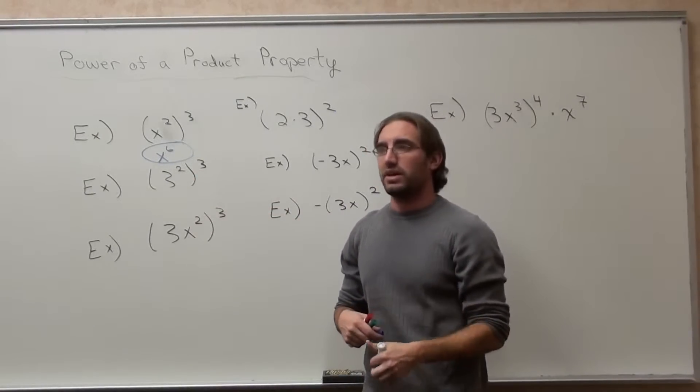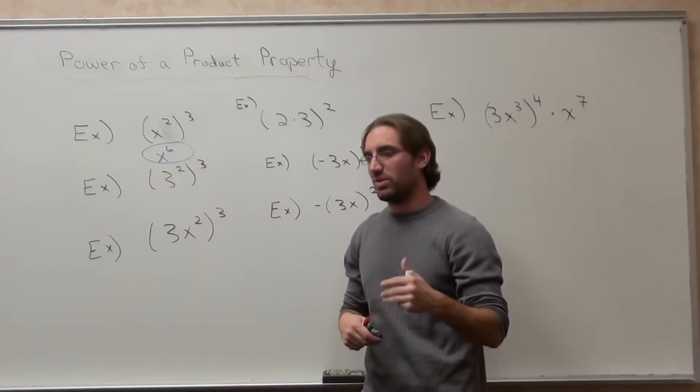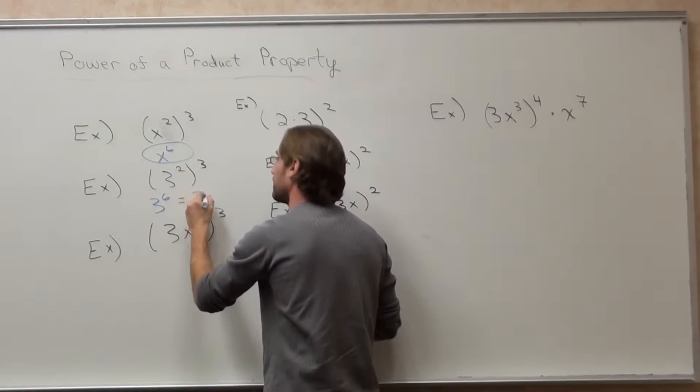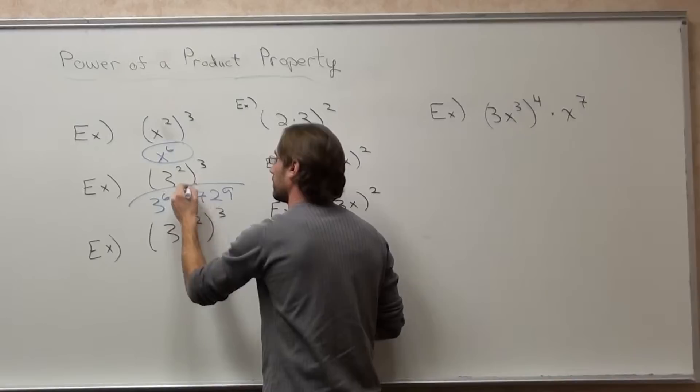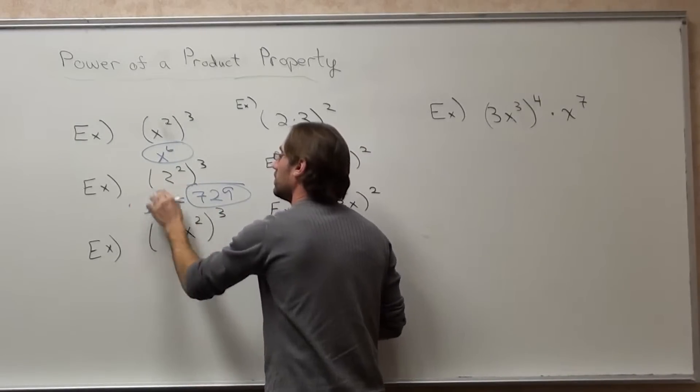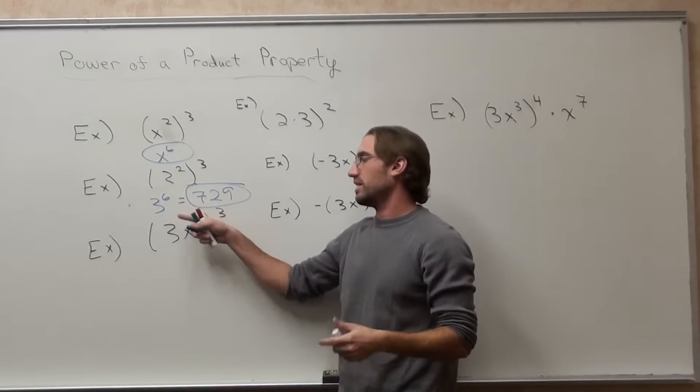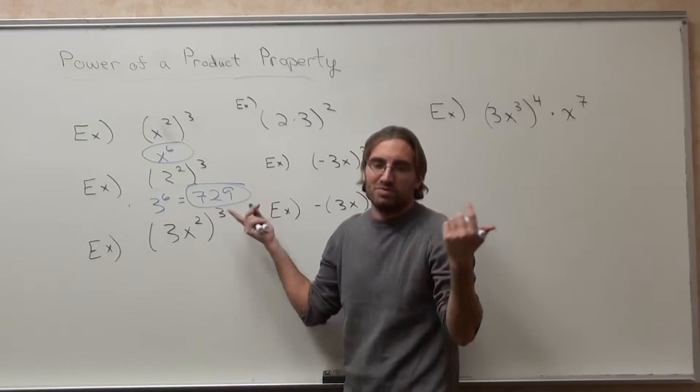It's 3 to the sixth, which is 3 times 3 is 9, 27, 81, 729. You'd actually circle the 729. And if your teacher says simplify, that's pretty much what it means.